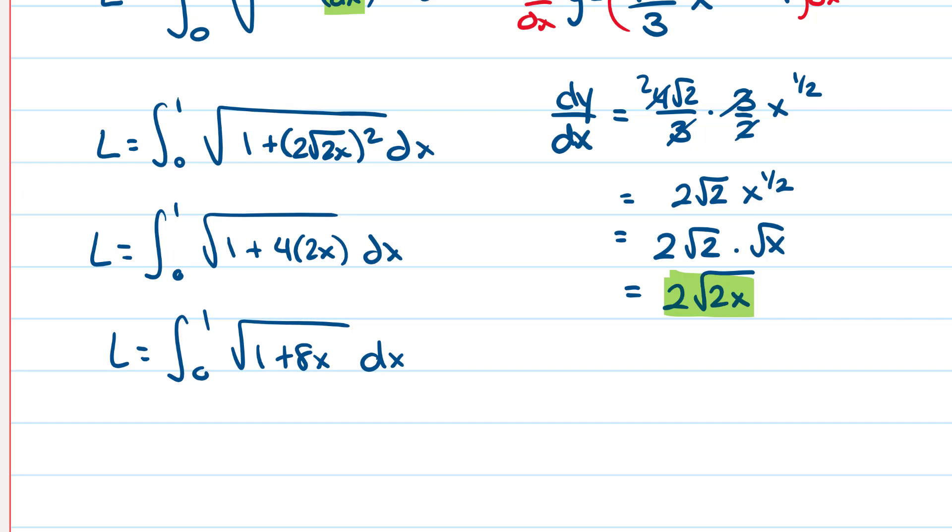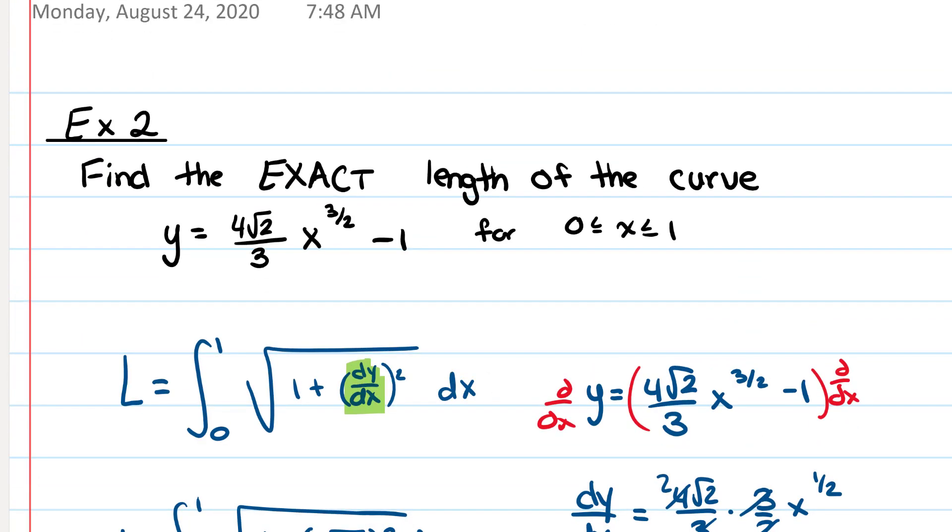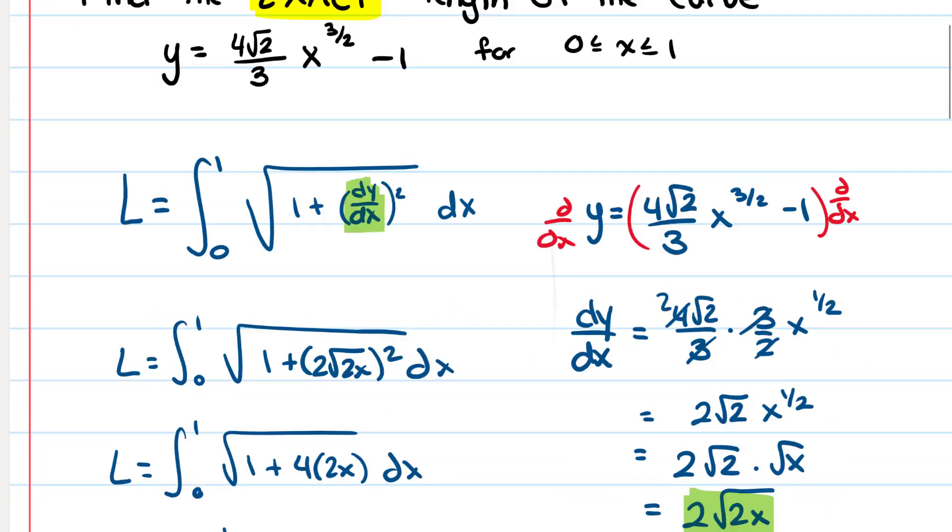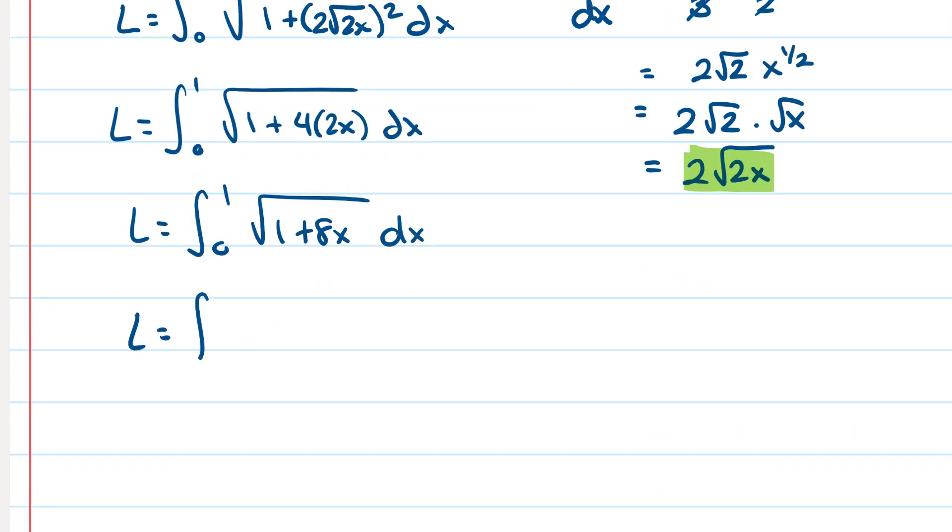Now at this point we make a decision. We either put it in our calculator or we do it by hand. Because the problem said exact, that's our hint that we're going to be integrating this by hand. So it's integral from 0 to 1, 1 plus 8 x to the 1 half dx.